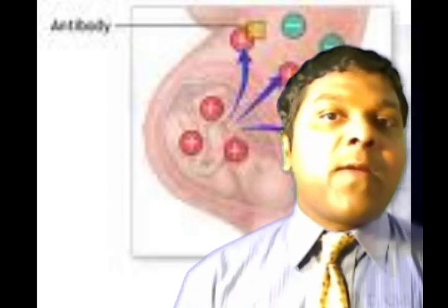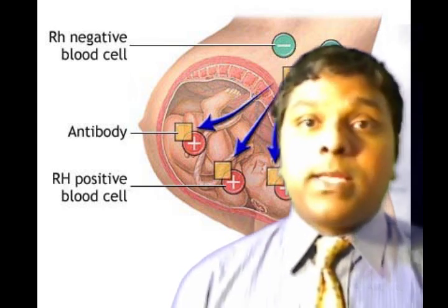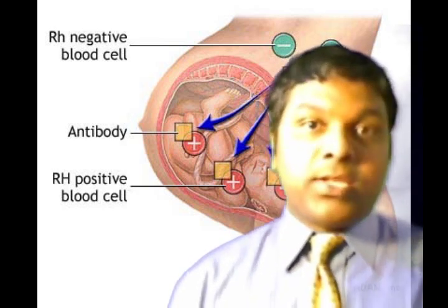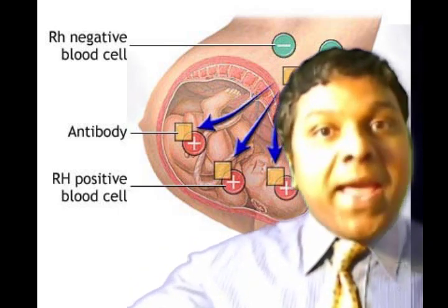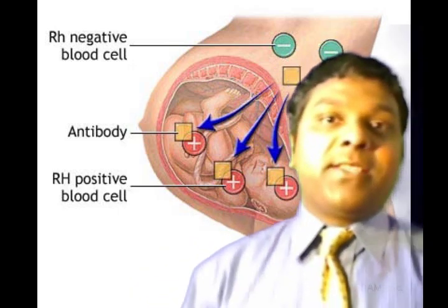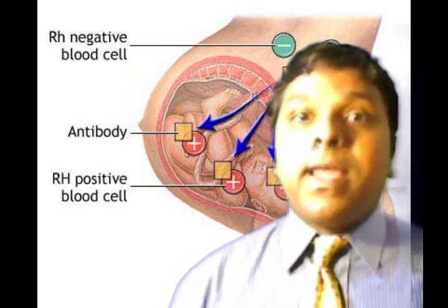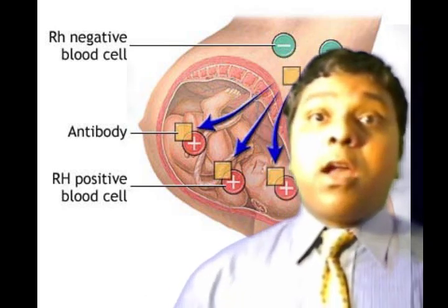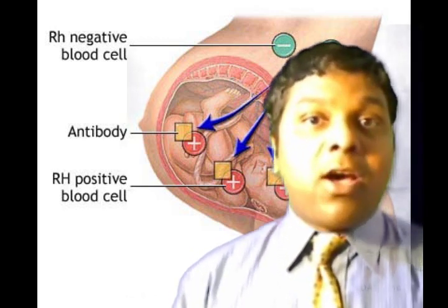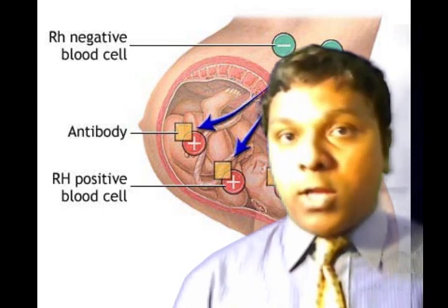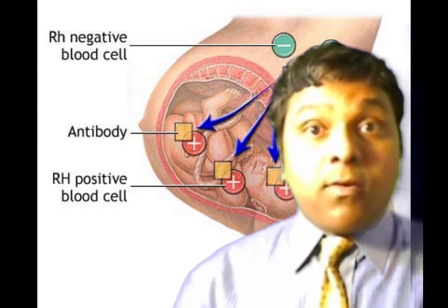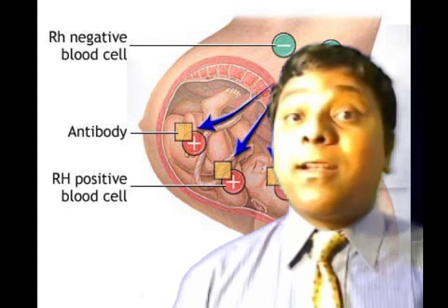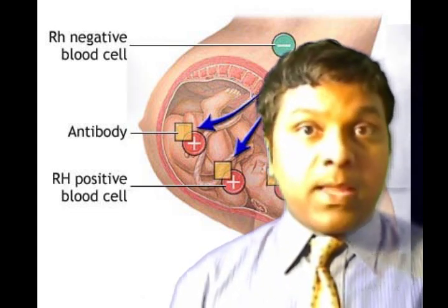At 28 weeks, antibody screening is performed. If the result is negative, 300 micrograms of RH immunoglobulin (RhIg) is given. If positive, the patient is managed as RH sensitized. At 35 weeks, the antibody screening is repeated. If negative, the patient is observed. If the screening is positive, the patient is managed as RH sensitized. Postpartum, if the infant is RH positive or Du positive, 300 micrograms of RhIg is administered to the mother, provided the maternal antibody screening is negative.